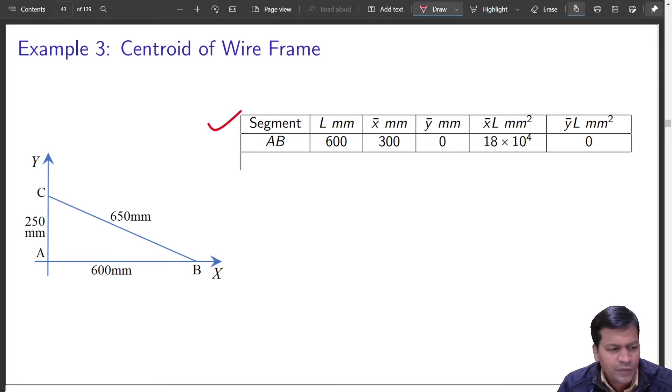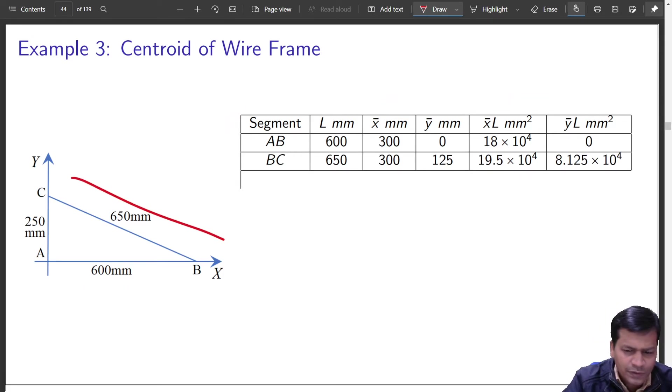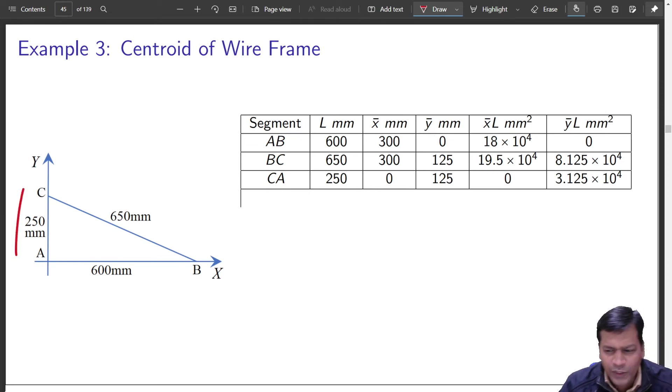This way you can create a table if at all it comes in exam also. So you can just create a table. L length x bar and y bar for that particular length. The one which is in consideration. So segment AB that is this one. Length is 600. X bar means this point from y axis. X bar is always from y axis. Y bar is from x axis. Distance from x axis. So that will be equal to 0. X bar L. X bar L. This is moment of this. So that comes out to be this and y bar L. You create keep creating table for BC segment this one. For CA segment this one. Same way.